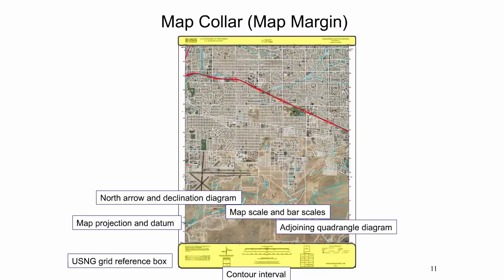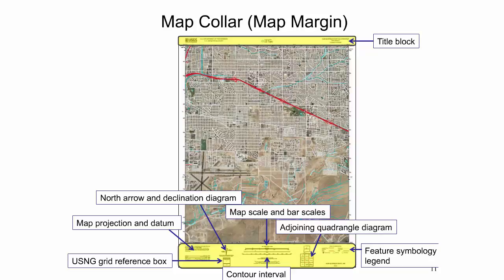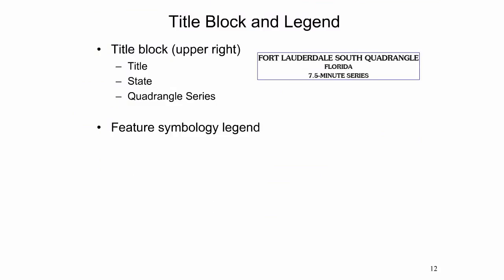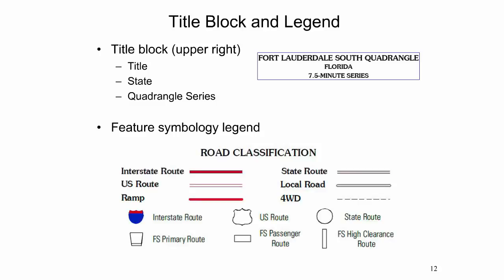The map collar is the area outside the projection line, highlighted in yellow. It includes elements such as the title block and feature legend. In the upper right corner of the map, the title block shows the title, state, and series of the map quadrangle. Moving clockwise, the feature symbology legend is found in the lower right corner. Map symbols incorporate different colors and patterns to distinguish between feature types and their relative importance. The feature symbology legend in US Topo maps explains part of the road-related map symbols, and a more comprehensive explanation is available on the National Map website.